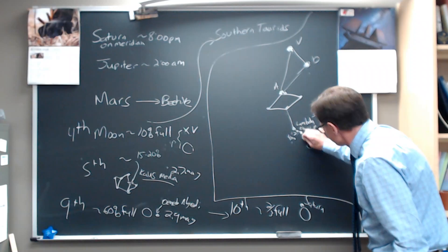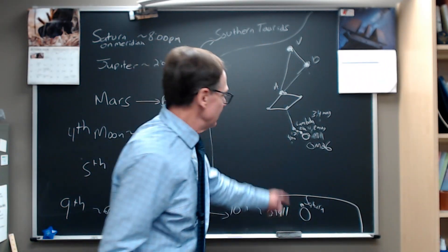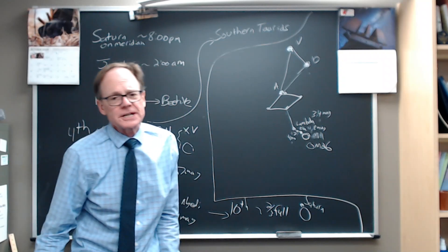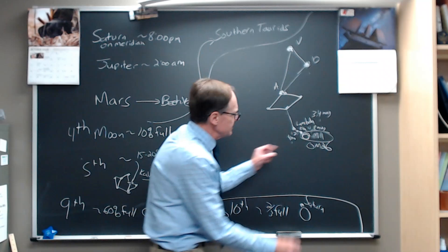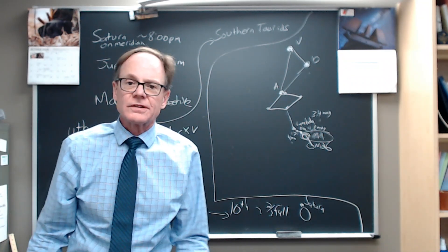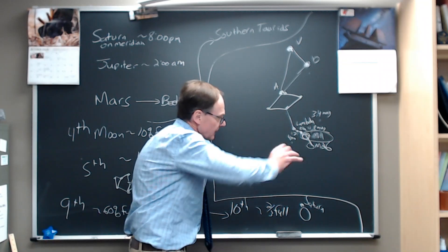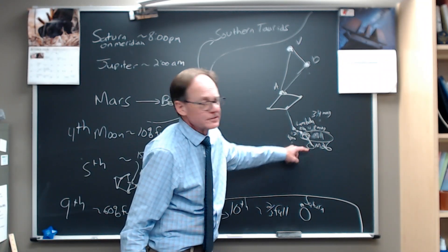Now, just below there is probably what I think is the best open star cluster that there is to observe, M11. Look at it in binoculars. If you've got a small telescope, it's just fabulous, is M11. And 3 degrees below there is another open star cluster, M26. We looked at open star clusters last week, these clusters that live in the plane of our galaxy. But M11 and M26 are great examples here.